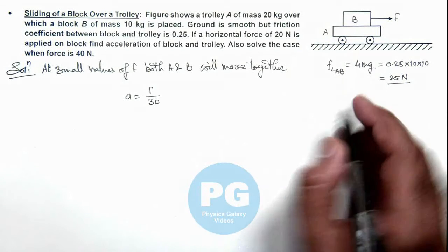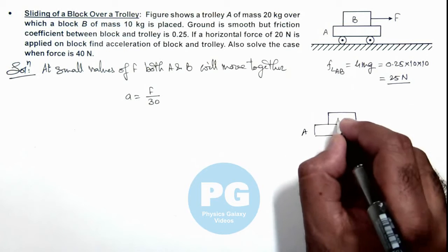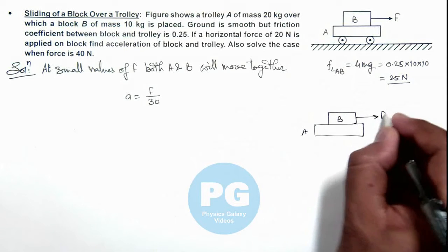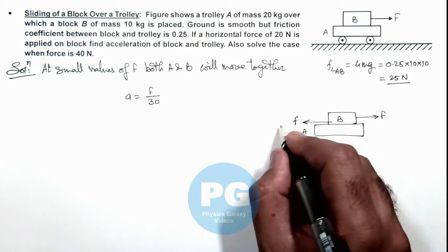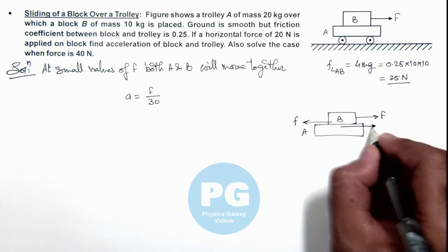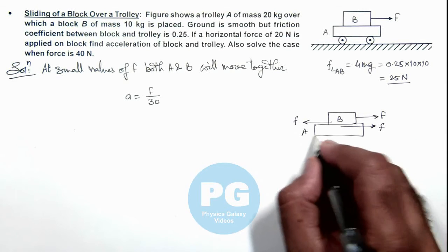Here if we analyze the friction between trolley A and block B, then we can see if a force F is applied onto it, the friction will act on block B in backward direction and on A the reaction of this force will be in forward direction. This friction is responsible for motion in trolley A.